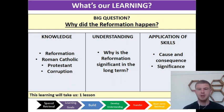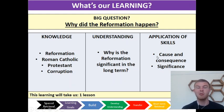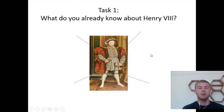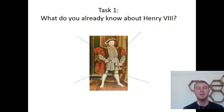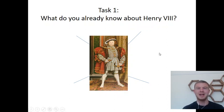In terms of the skills we're developing, we're going to be looking at cause and consequence — how this happened — and significance, why we remember it and why it's so important in history. First task: everybody knows a little bit about Henry VIII from primary school, so try and note down in a mind map — put Henry VIII in the middle, do it on Word or on paper — anything you remember about Henry VIII. You can look at the picture to help you. I've been working on my Henry VIII physique in lockdown, getting more like him every day with all the food I've been eating!